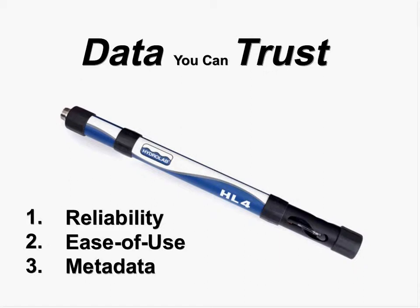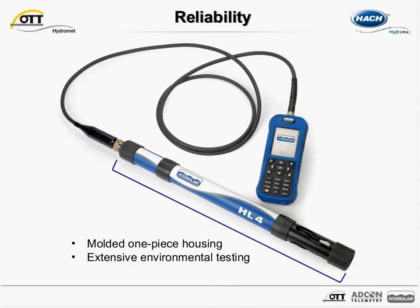The sonde housing is molded in one piece from a durable polymer. Molding the housing minimizes potential leak paths and allows the natural openings to be protected with tried-and-true o-ring seals. This is not a fancy approach, but it has been proven to be a reliable way of protecting the sonde electronics down to depths of 200 meters for decades. The HydroLab HL4 has passed extensive testing including operational tests from negative 5 to 50 degrees Celsius, drop tests from 4 feet (1.2 meters), and vibration testing.